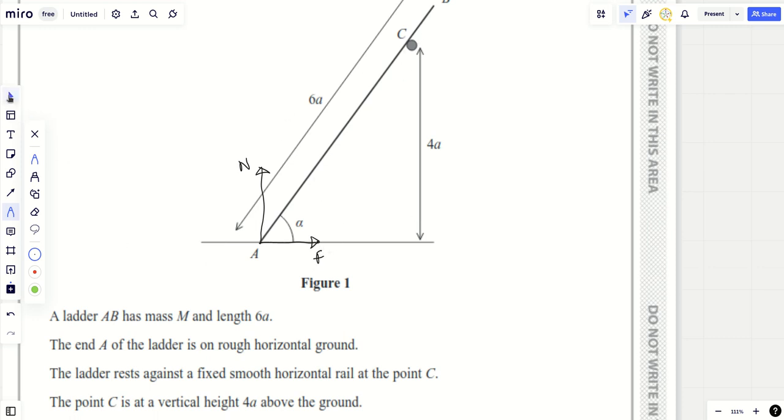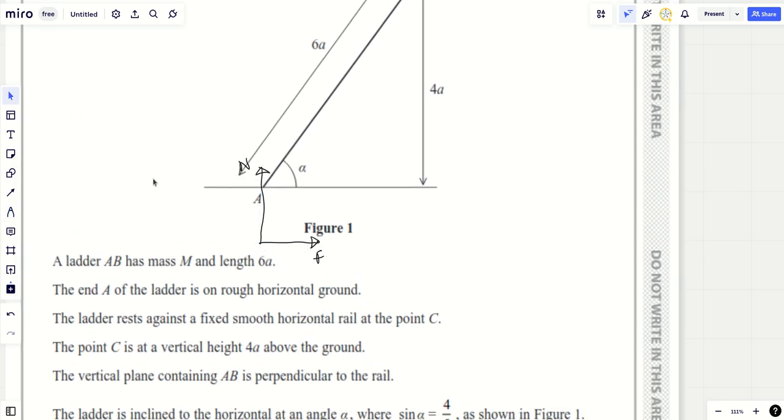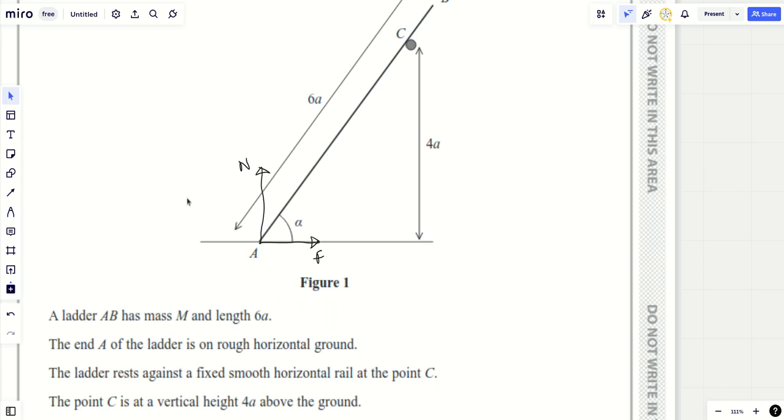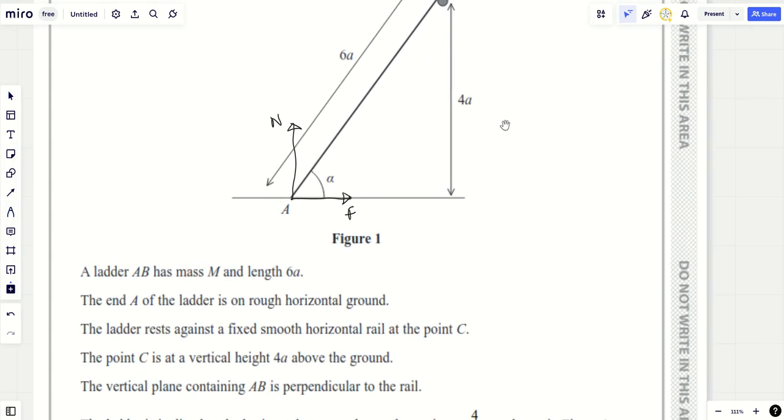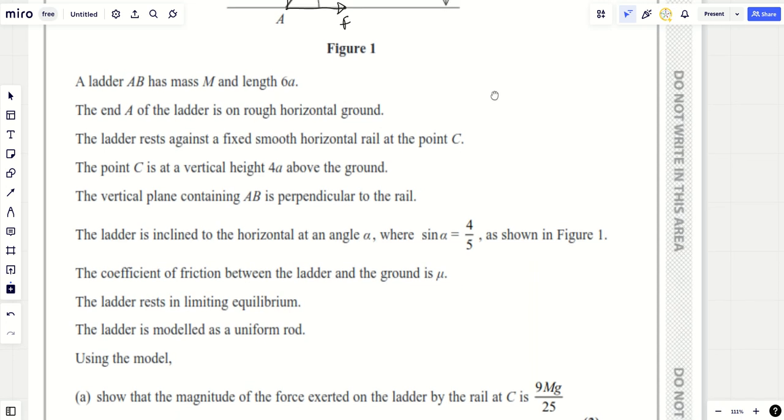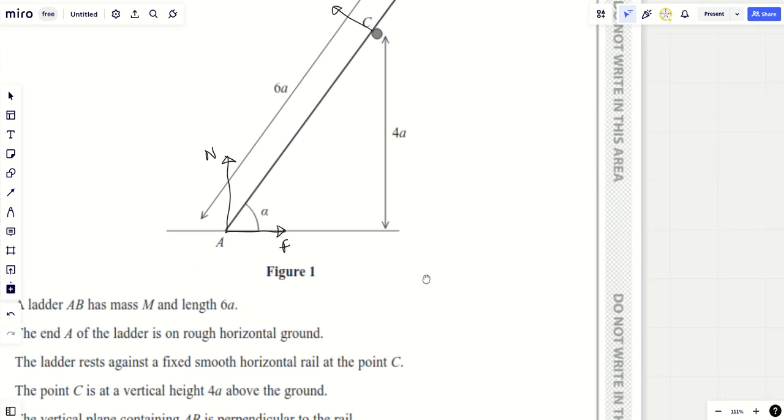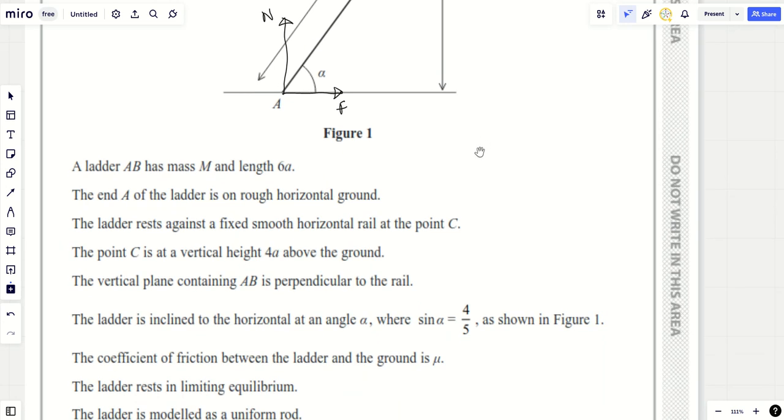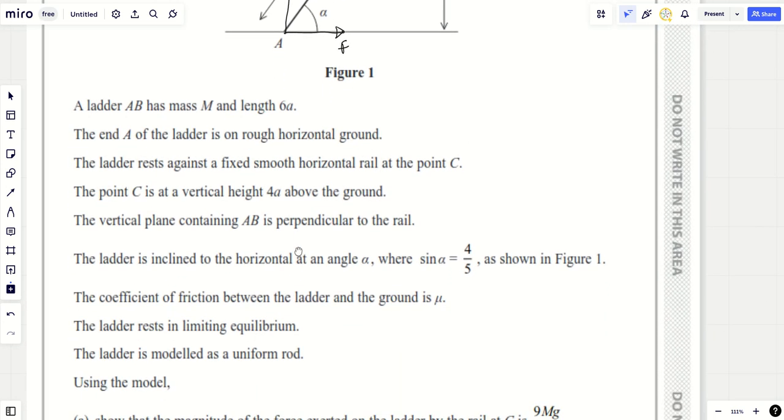So I'm going to put a normal reaction at A. Is the ground smooth or not? It's rough horizontal ground, so I need a friction F. I'm guessing the thing at C is smooth—let's have a look. Smooth horizontal rail at C, perfect. So we've got N and F down here, we've got that up there. Point C is 4a above the ground, and this is 6a long. But do we know the distance from A to C? Can I add that to the diagram? Unless I'm missing something.